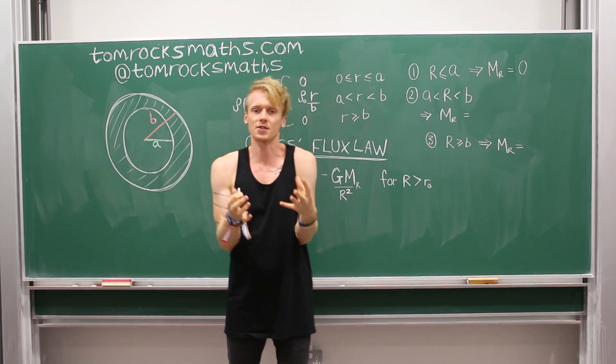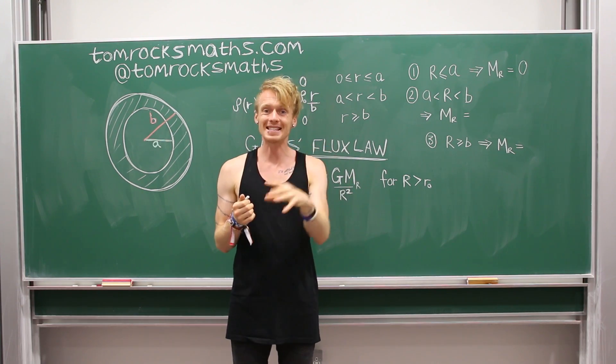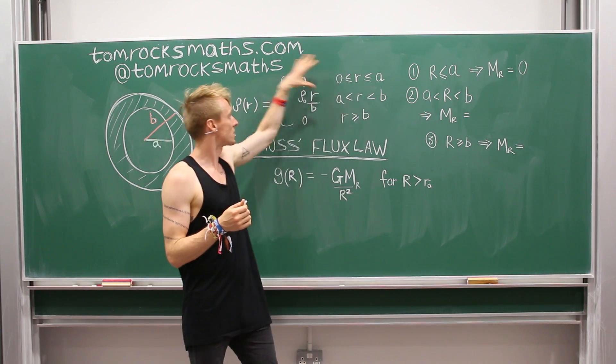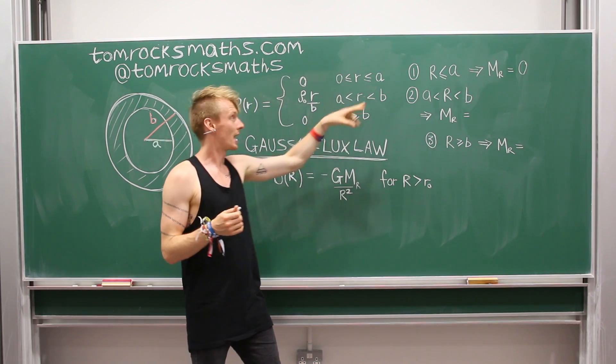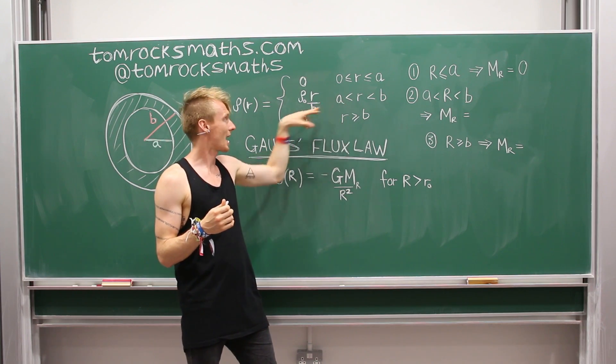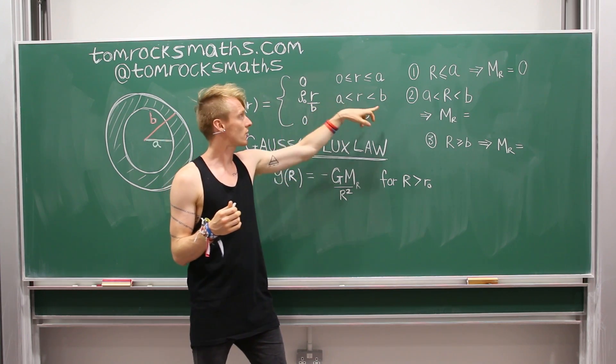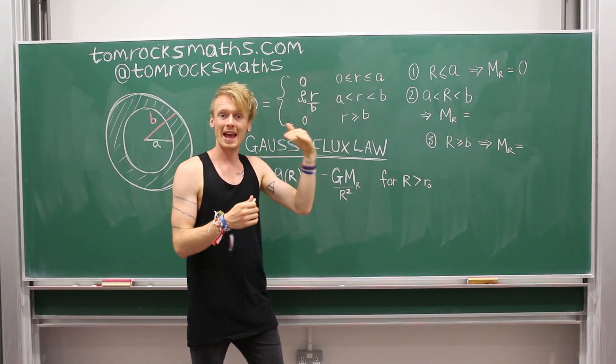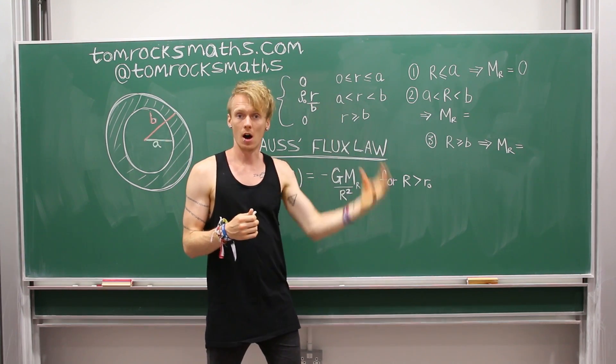And to do this, to work out the mass of something, what you do is you integrate the density function. So we know the distribution of density, and in particular, we know it inside the shell, so between A and B. So we just have to integrate this function between A and our radius capital R.